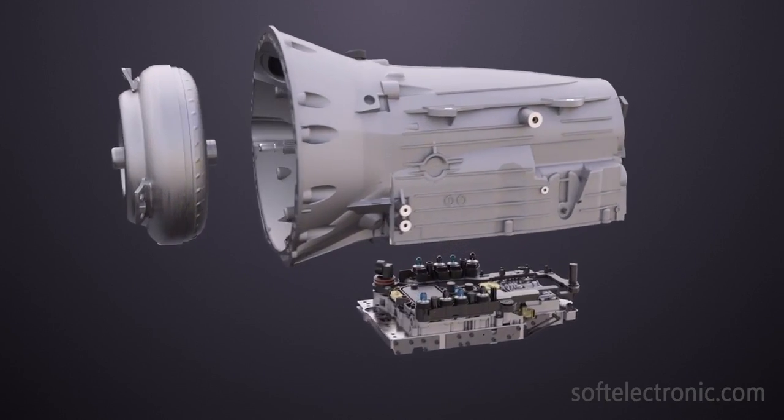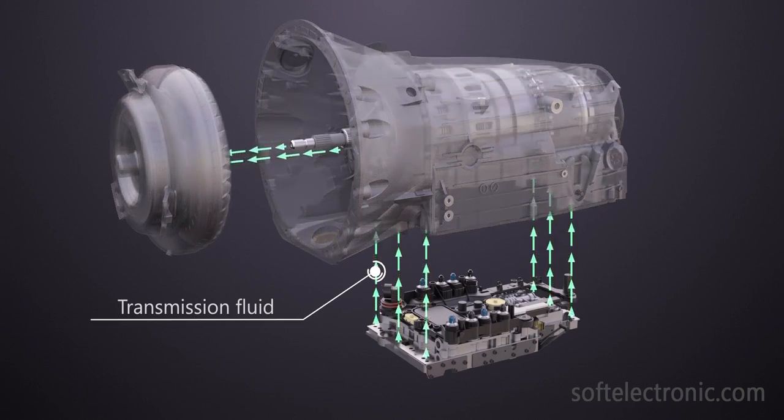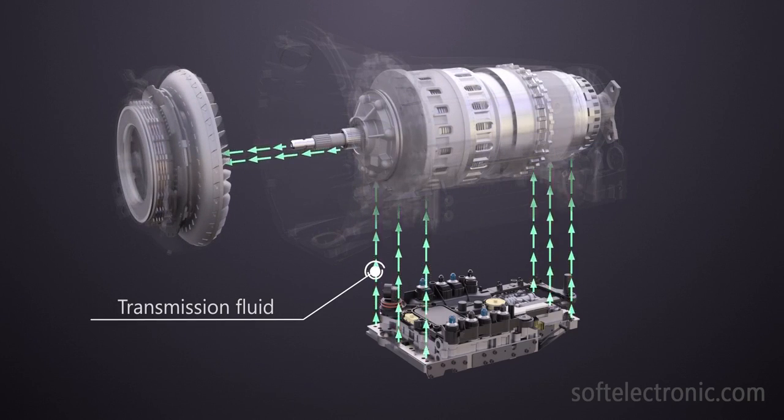The mechatronic is the control center of the gearbox. Its task is to manage the torque converter and the clutch packs in the gearbox via the transmission fluid under specific pressure.